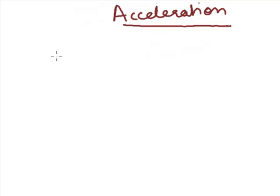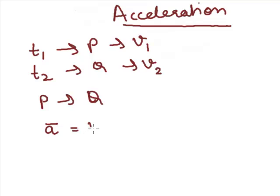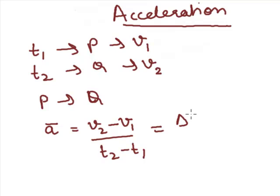After instantaneous velocity and speed, we will talk about acceleration. Acceleration is the rate of change of velocity with time. For describing average acceleration, consider the motion of an object along the x-axis. Suppose at time t1 the object is at point P moving with velocity v1, and at time t2 the particle is at point Q moving with velocity v2. So average acceleration from P to Q is a equals v2 minus v1 upon t2 minus t1, which equals delta v upon delta t.